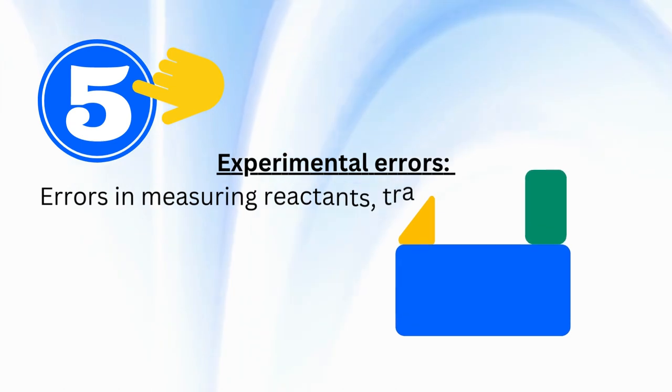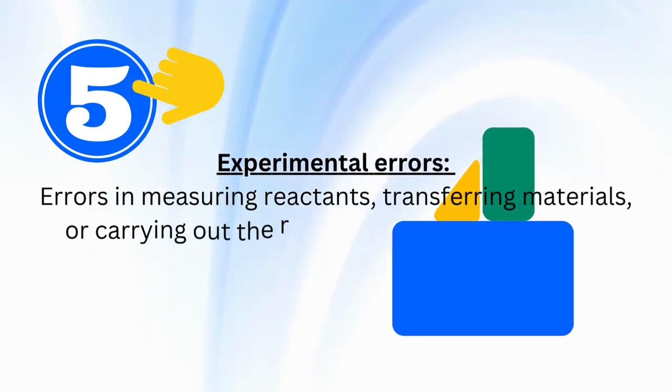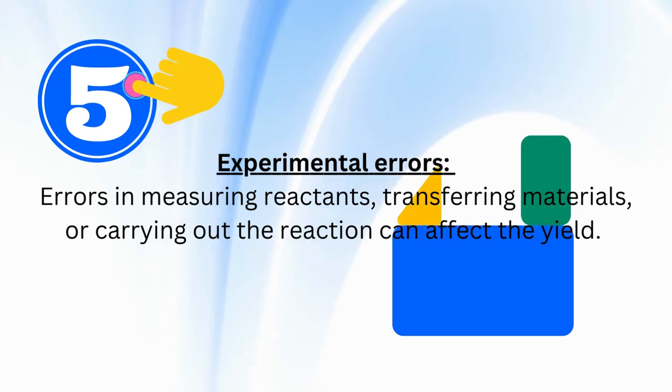Number 5. Experimental errors. Errors in measuring reactants, transferring materials, or carrying out the reaction can affect the yield.